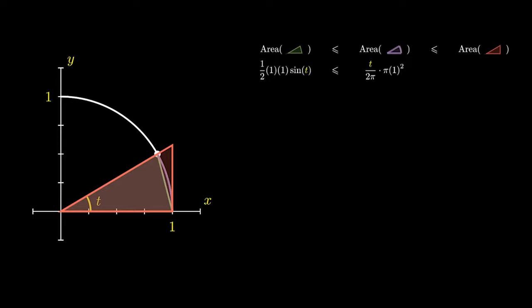And the red triangle has base 1 and height tangent of t, therefore it must have an area of half times 1 times tangent of t. We can simplify some of the calculations, get rid of the 2, and recall that tangent of t is equal to sine of t divided by cosine of t.